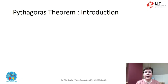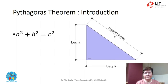The Pythagoras Theorem tells us the relationship in every right-angled triangle: A squared plus B squared equals C squared. The Pythagoras Theorem is normally stated as: in a right-angled triangle, the square of the hypotenuse is equal to the sum of the squares of the other two sides.